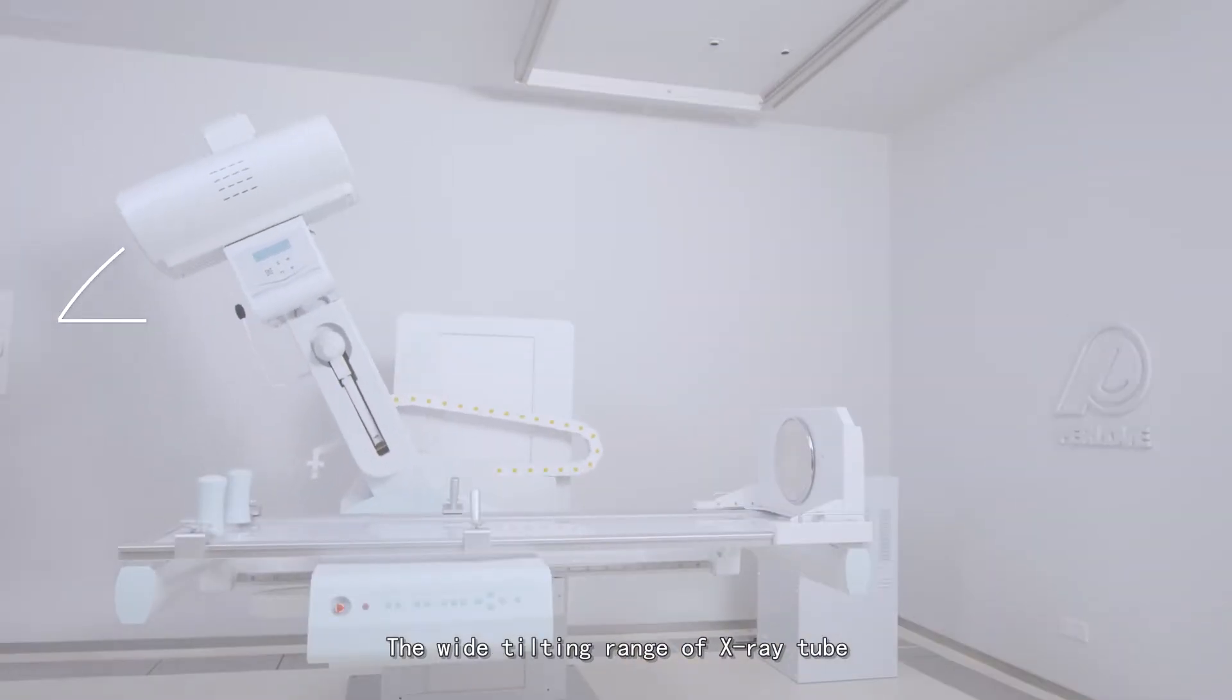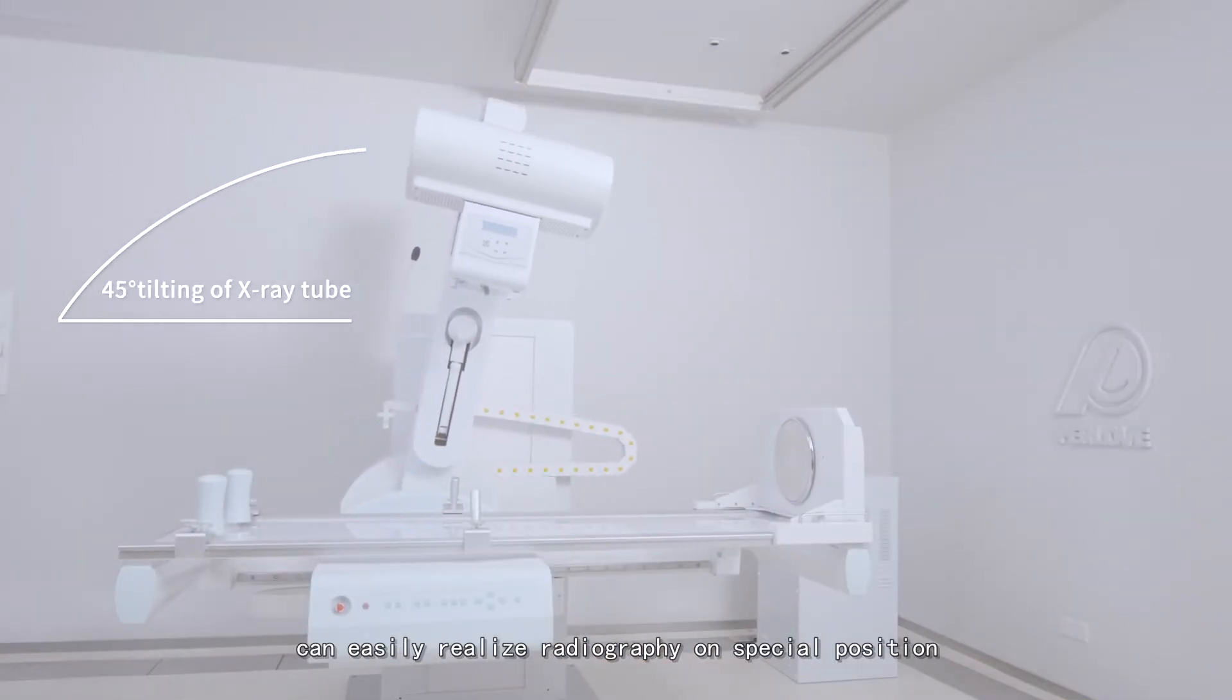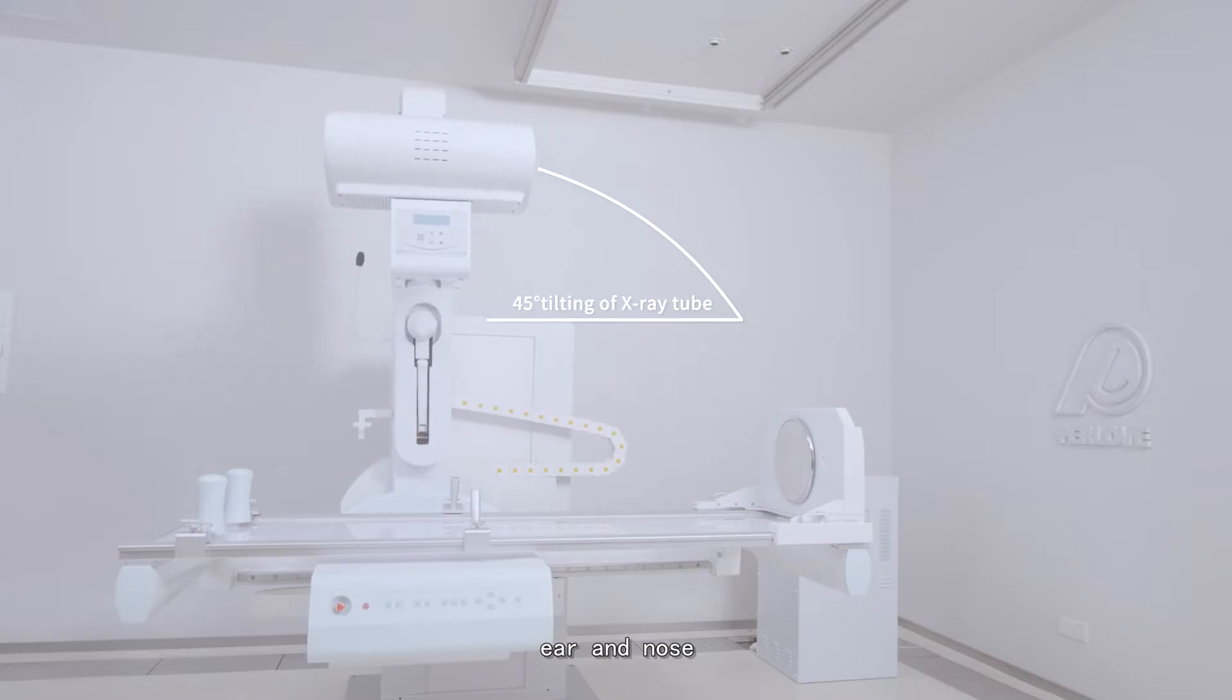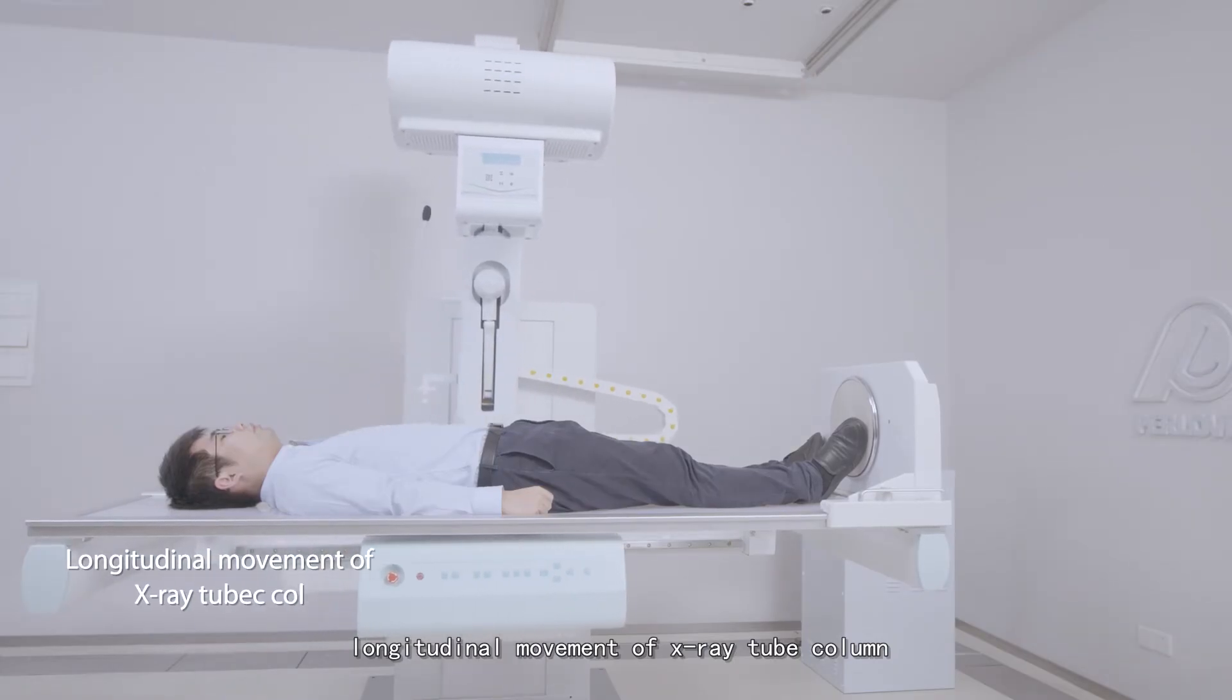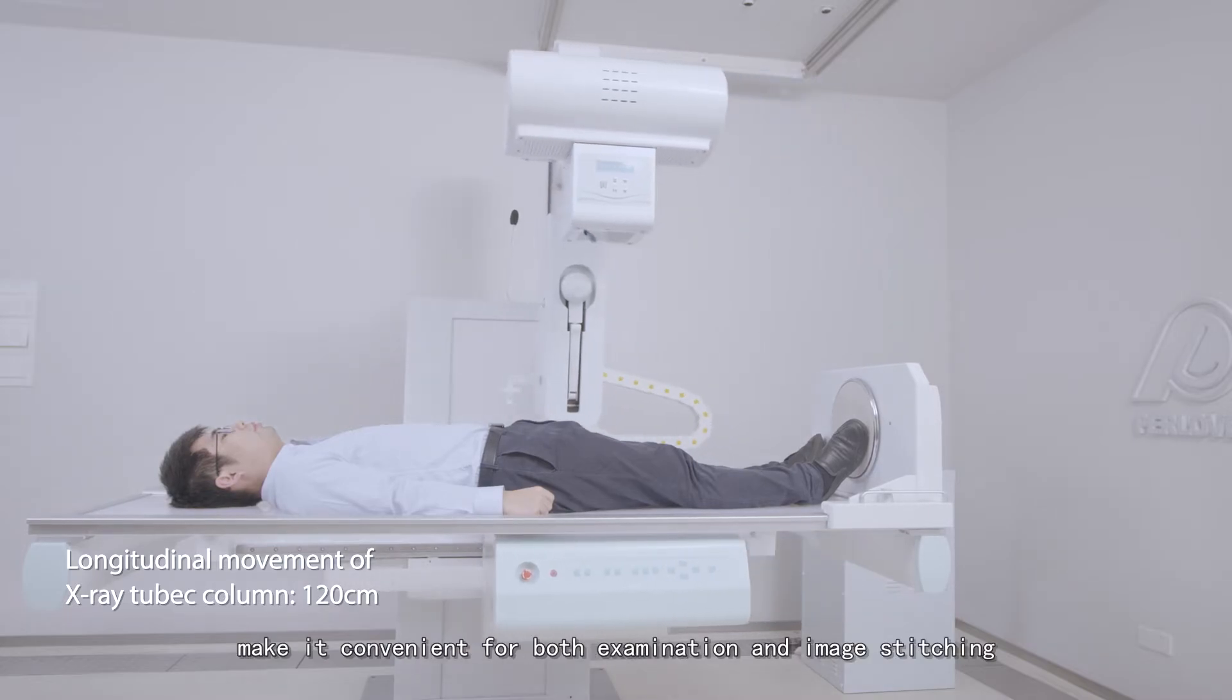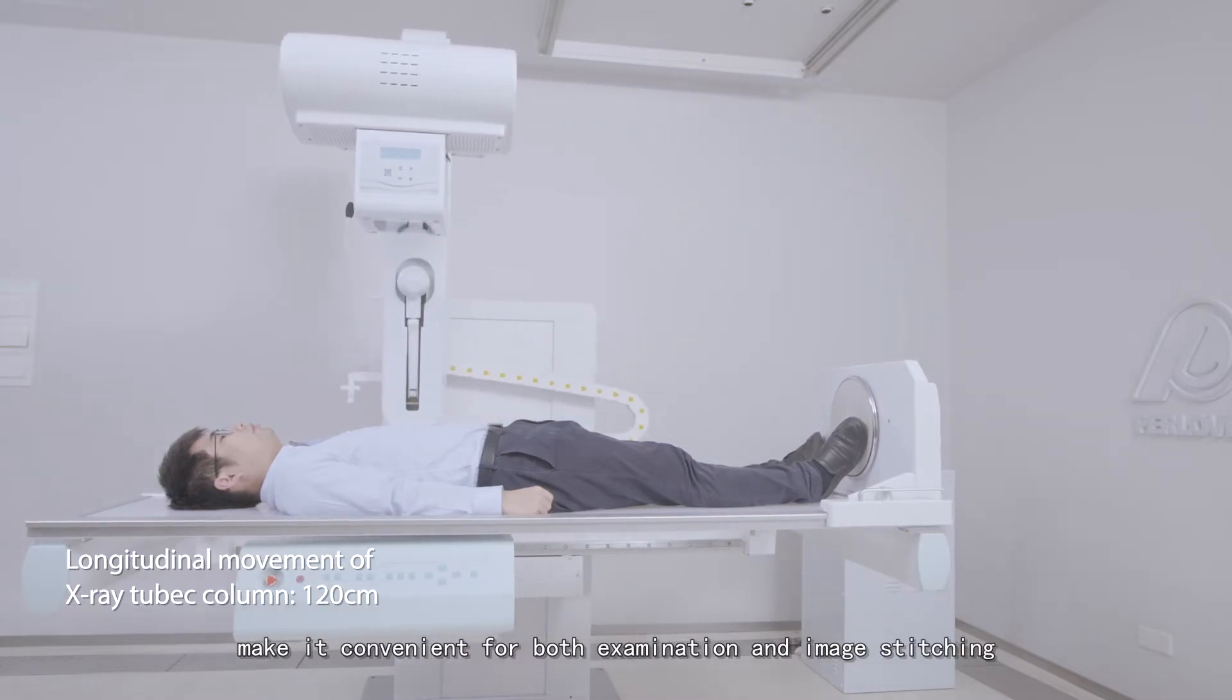The wide tilting range of X-ray tube can easily realize radiography on special positions, like radiography of patella, heel, ear and nose. Longitudinal movement of X-ray tube column provides large coverage area, making it convenient for both examination and image stitching.